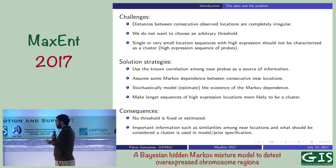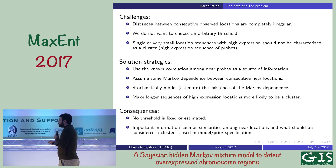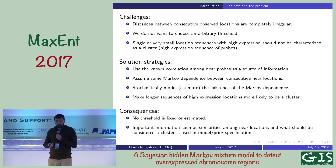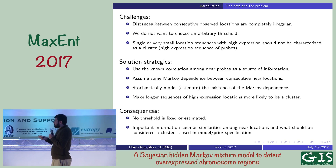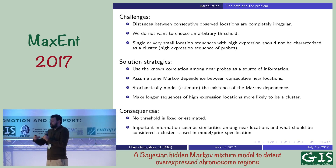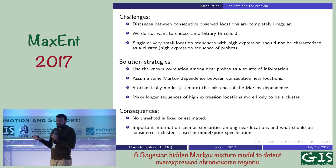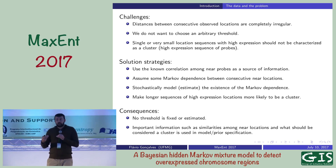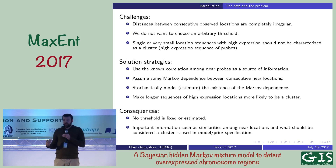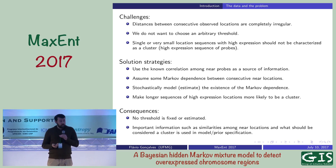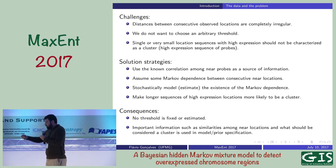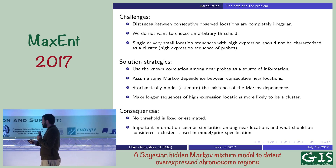Our strategies are to use the non-correlation among nearby probes in the model by assuming a Markov dependence that depends on the distance between probes. But it's not obvious how to use it because the distances are completely irregular. So instead of directly making the Markov dependence depend on distance, we model the dependence stochastically: there is a probability that there is a Markov dependence, and we use the distance to model this probability. This is a smoother, computationally convenient way to handle the irregularity.